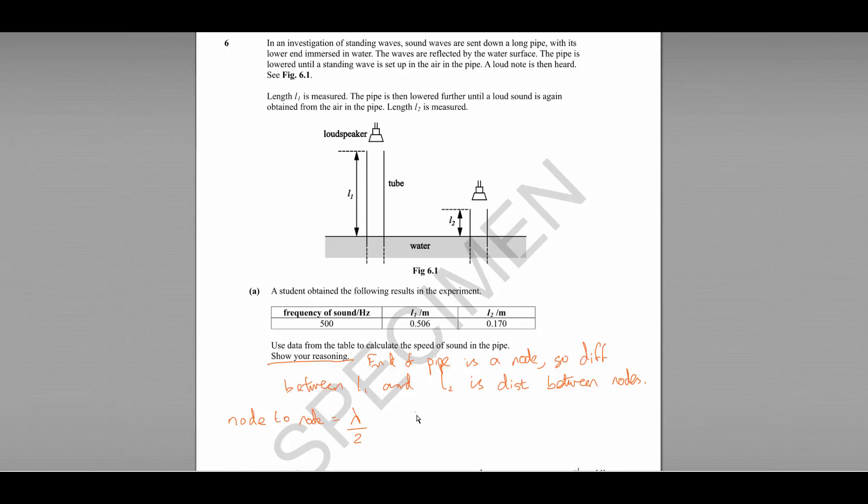So our wavelength here is going to be two times the difference between 0.506 and 0.170 which gives us a wavelength of 0.672 meters.